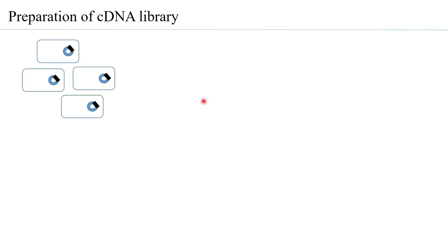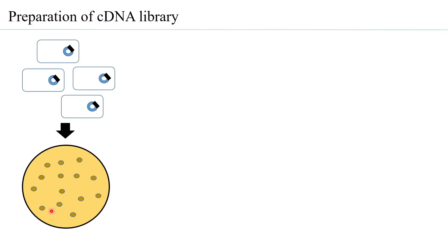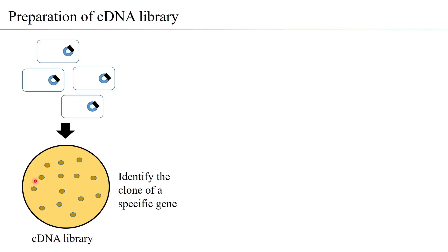When you have the transformed bacteria or cells with the cDNA, you have the master plate ready. Each colony growing on the master plate will have a cDNA clone. The task after getting the cDNA library is to identify that particular clone which has the specific gene of interest.